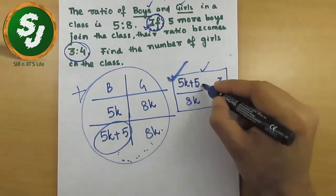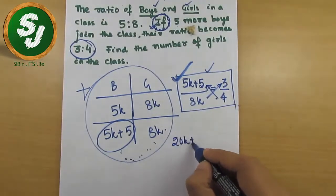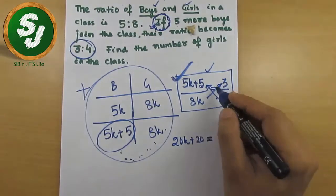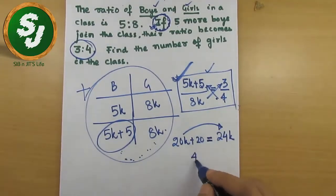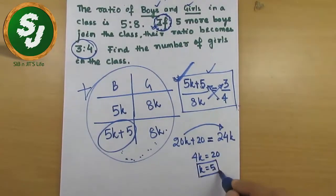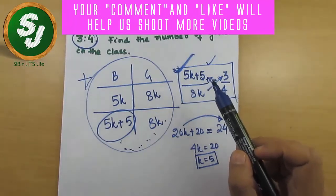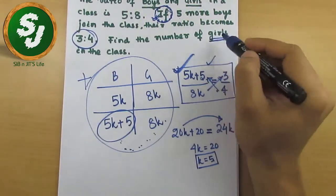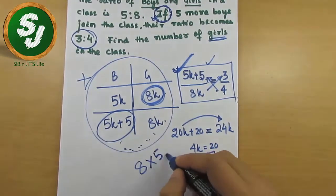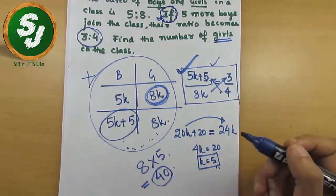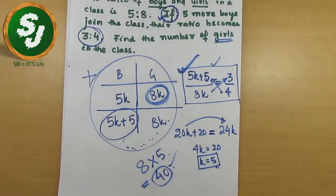There is a need for cross multiplication. So 4 × (5k + 5) = 3 × 8k, which gives 20k + 20 = 24k. Arranging k on one side: 4k = 20, so k = 5. Once you find k, the question is almost solved. The number of girls is 8k = 8 × 5 = 40. So the number of girls in the class is 40.